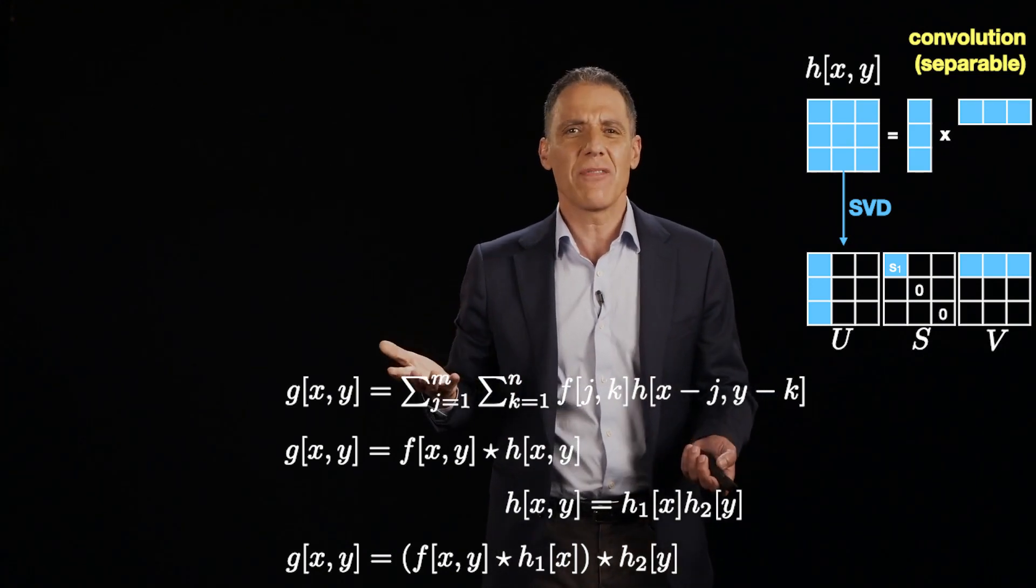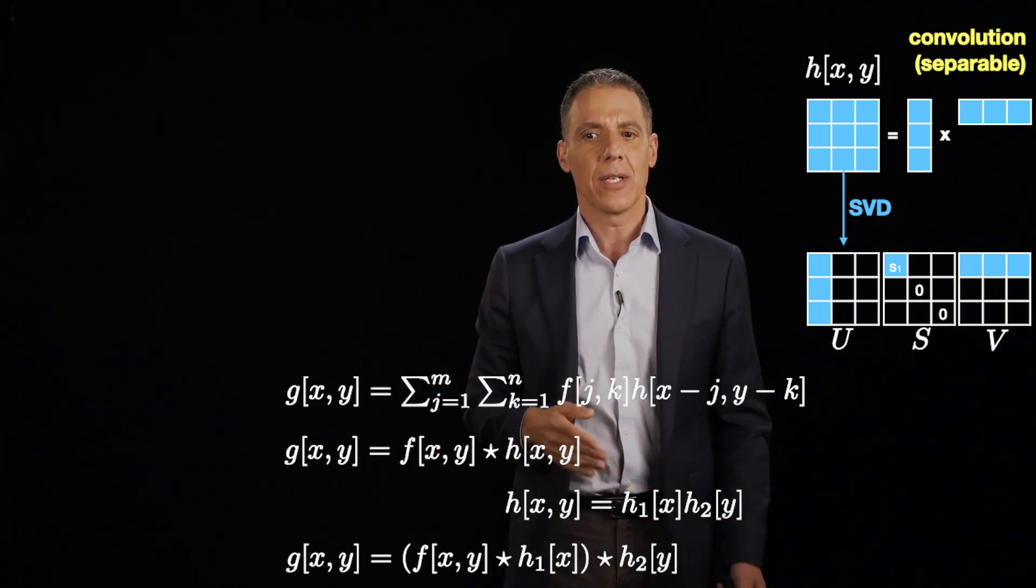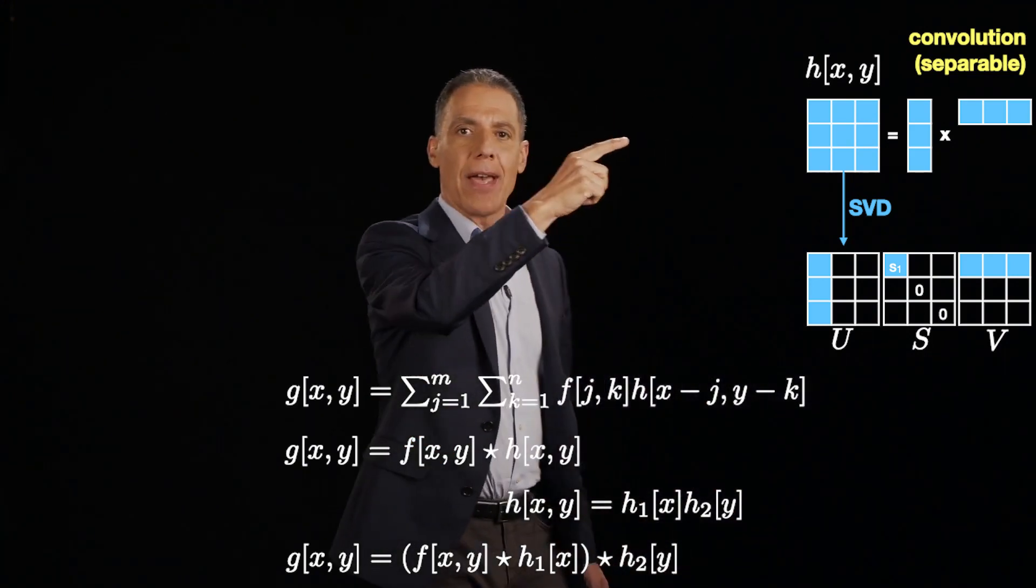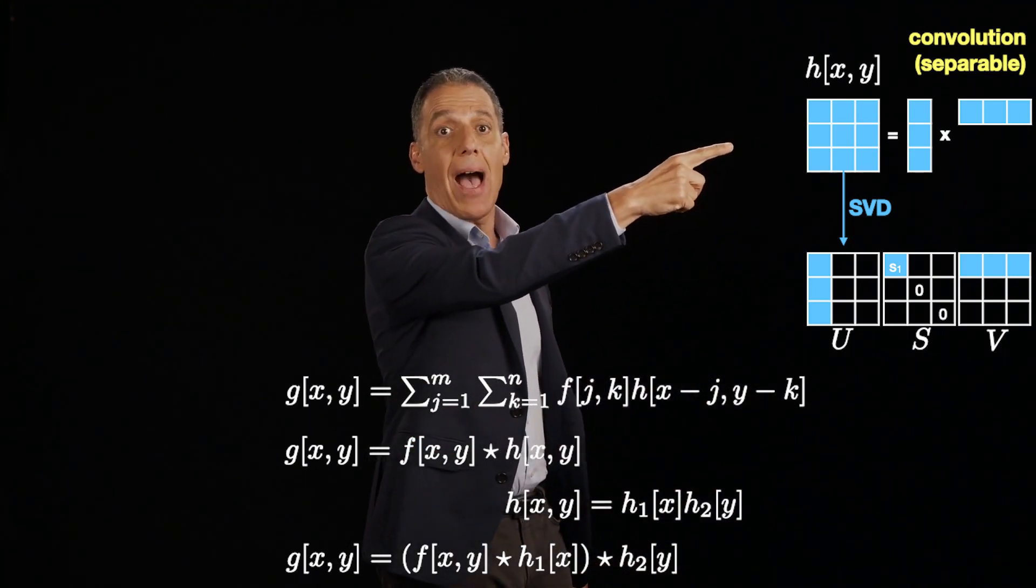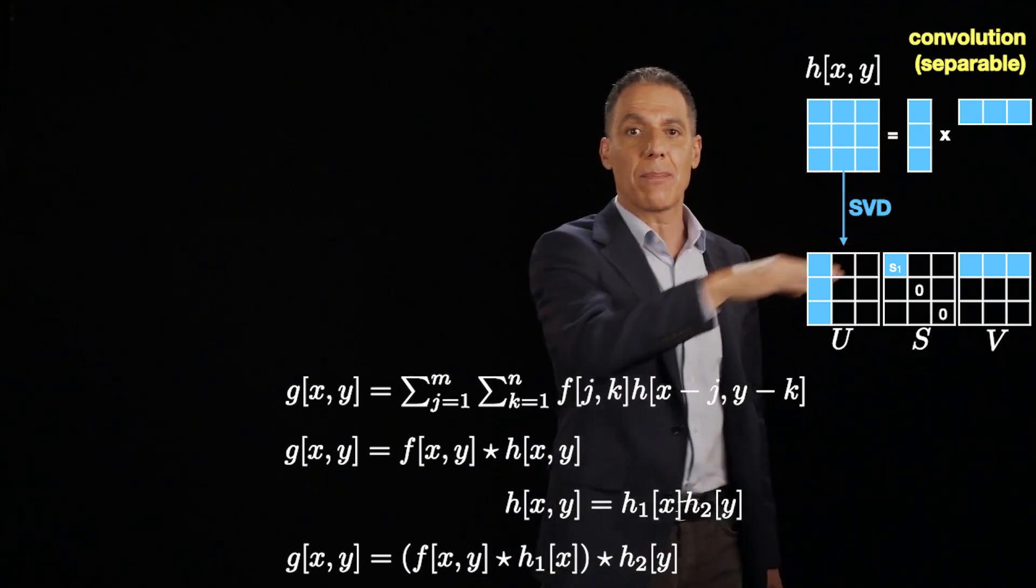So what's the savings? Now I have to do 2 convolutions, not 1. Well, let's see. How many values are in there? It's 9. How many values are in the separable? 6.